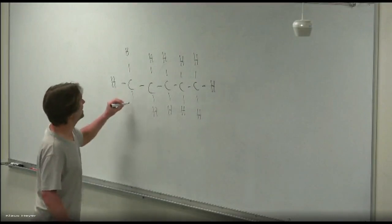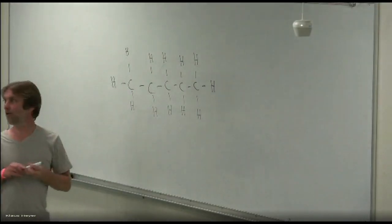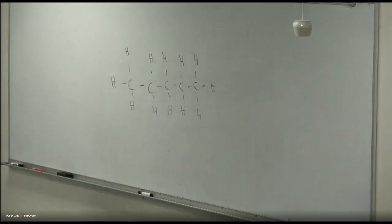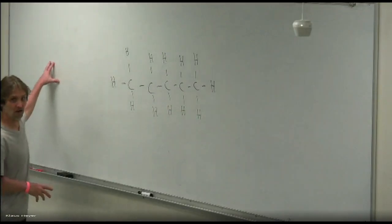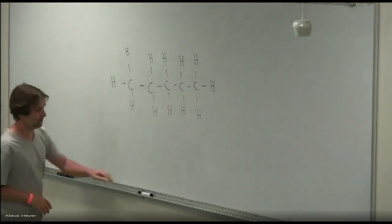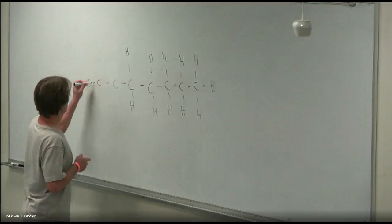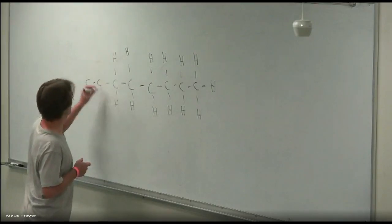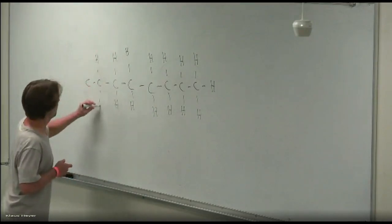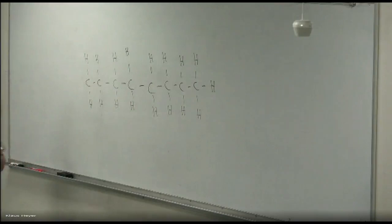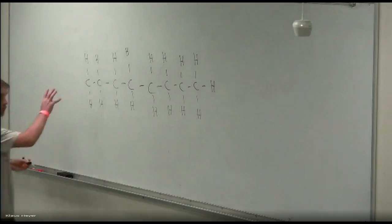Really I want this chain to be 18 carbons long, but I'm not going to draw that. Imagine this thing is a lot longer. These are what fatty acids typically look like — lipids. They're like these really long chains of hydrocarbons.